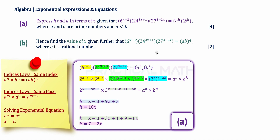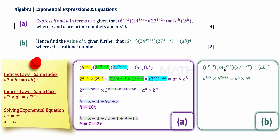In part B, the left-hand side is the same as in part A, so the right-hand side of part A equals the right-hand side of part B. We replace A to the power of H with A to the power of 10x, and B to the power of K with B to the power of 7 minus 2x, using our part A answers.